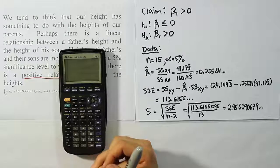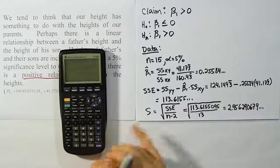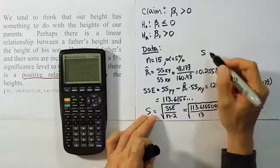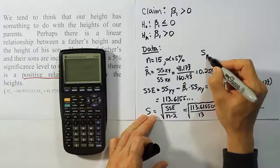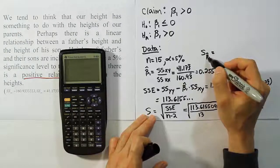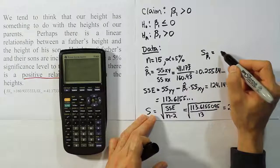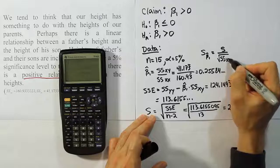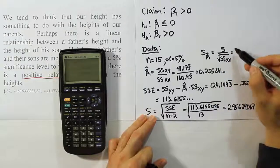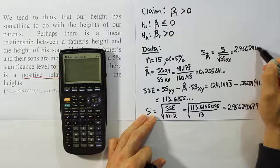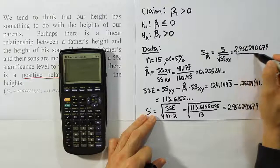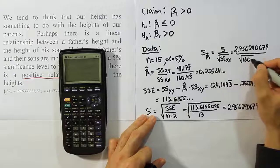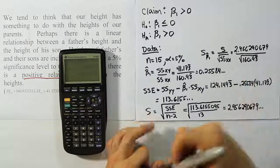Now, from there, the next step after that, and the final important step for the data part of the problem, is to take that S value and come up with something called S, or the standard error for beta 1 hat. So S, or the standard error for beta 1 hat. So it's like an S with a little subscript of beta 1 hat there. And this formula is pretty straightforward, it's just the S value we just calculated, divided by the square root of the sum of squares for the X values. Okay, so our S is going to be 2.956290679 over the square root of this value, SSXX, which is 160.93 repeating.